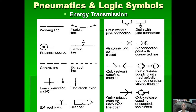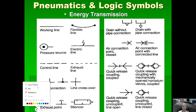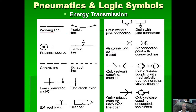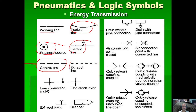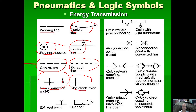Now for pneumatic line symbols: we have a working line, a flexible line, a pressure source, an electrical line shown as a broken line with longer dashes, a control line with smaller dashes, and an exhaust line. For line connections, a dot indicates a connection while no dot means a crossover or jumper with no connection. We also have an exhaust point and a silencer symbol.